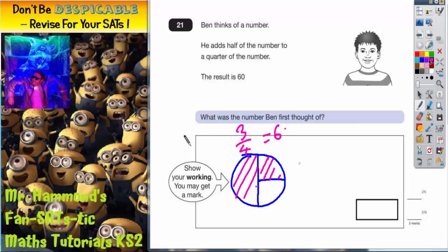So if three quarters of his number is 60, then the question is what is one quarter? Well, if three quarters is worth 60 altogether, then if you split that into three equal bits, each bit must be worth 20.